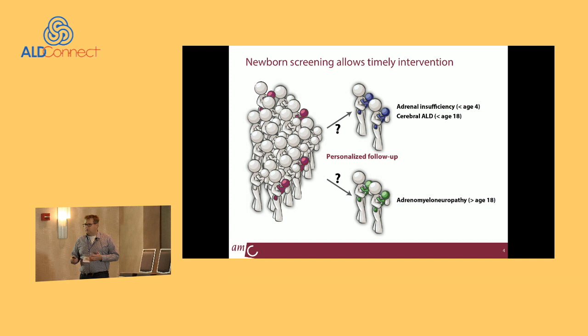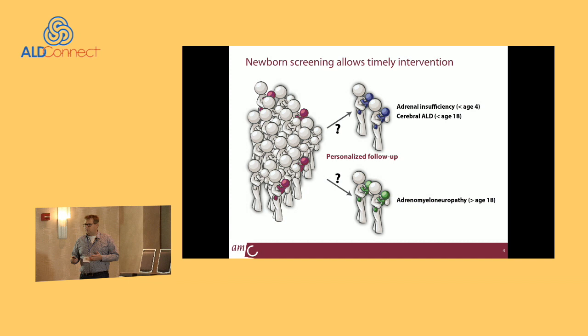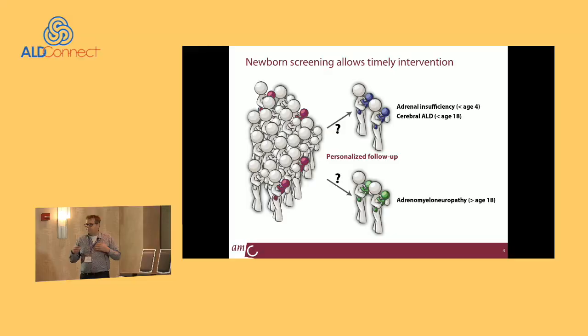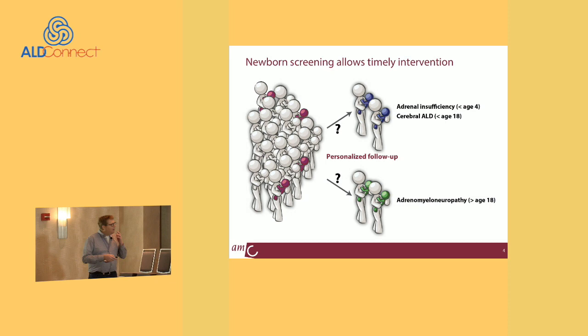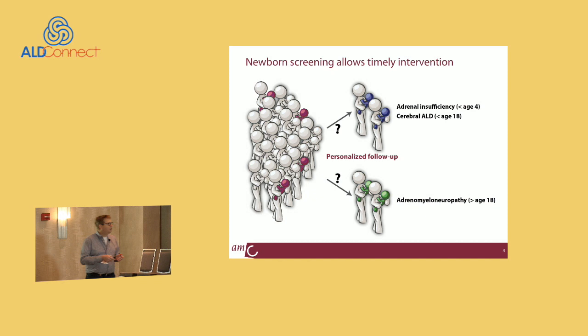If we do newborn screening, we can identify these boys at birth. There is a window of opportunity before they develop the first clinical symptoms. So if we pick up these boys at birth, there is time to follow and monitor them, and as soon as there are signs of adrenal insufficiency or cerebral ALD, treatment can be initiated. There is still a large population of ALD patients who develop adrenal myelopathy for which there's no therapy. We would like to have a way of predicting earlier on which route an individual patient will take, so interventions can start even earlier.